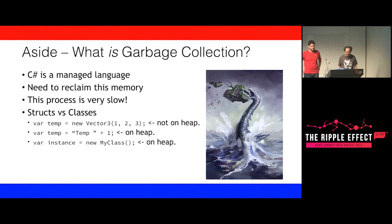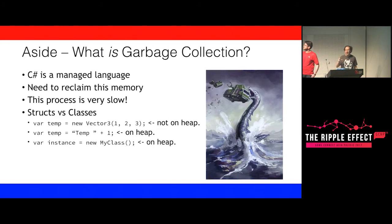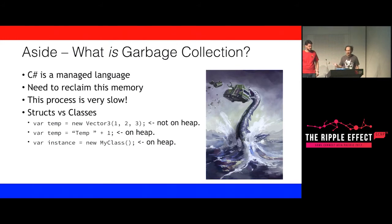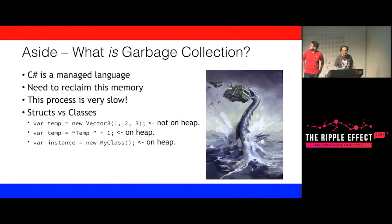Garbage collection happens when you create something on the heap. Here are three examples: first, a Vector, which is a struct — that call will not generate any garbage, it doesn't allocate on the heap. The second and third will both generate a heap allocation. Of particular interest is the string concatenation: everywhere you have something like "health = " + healthValue, that's allocating a string every time, which will eventually need to be cleaned up by the garbage collector.